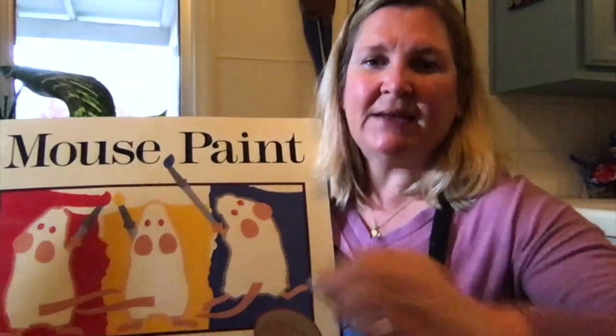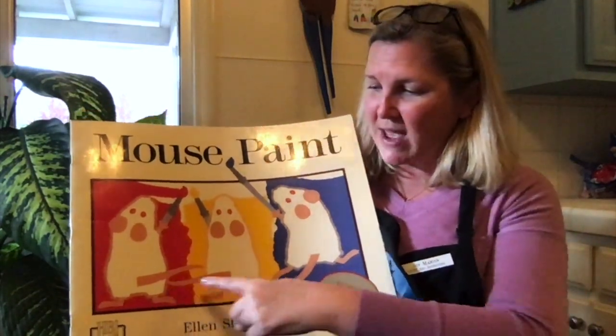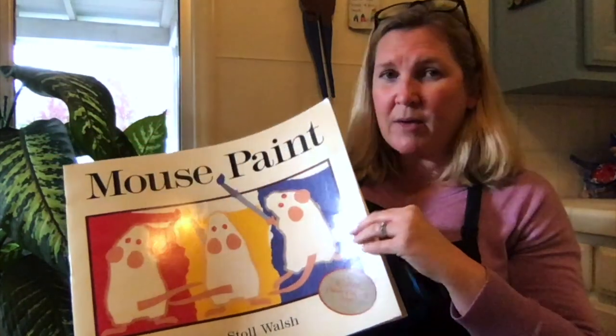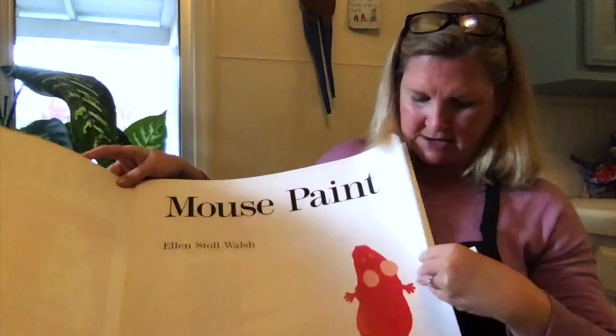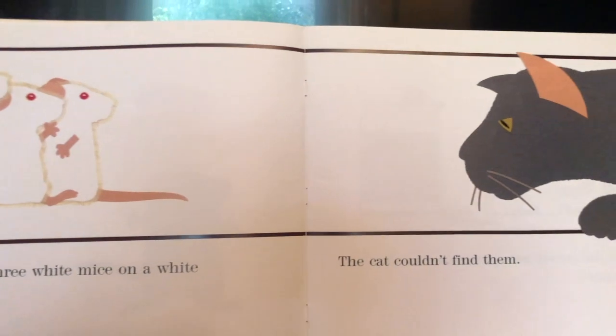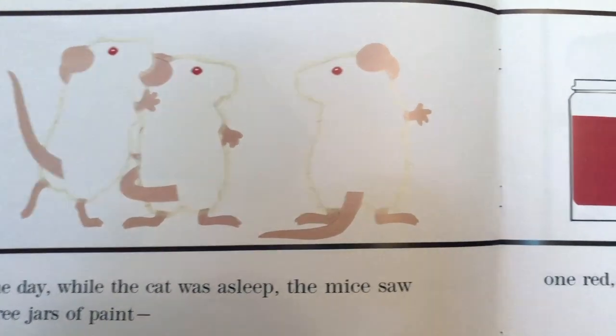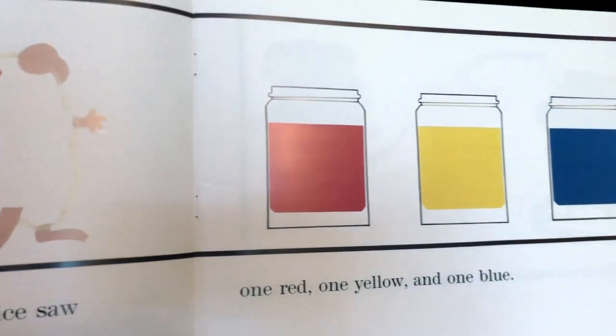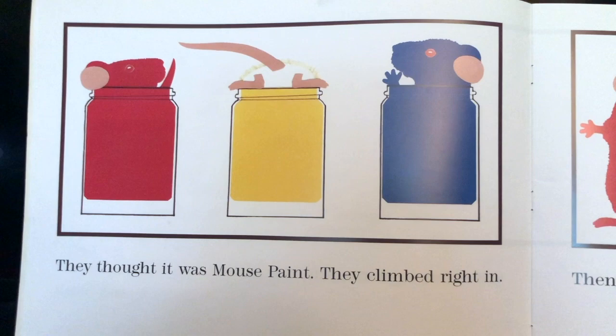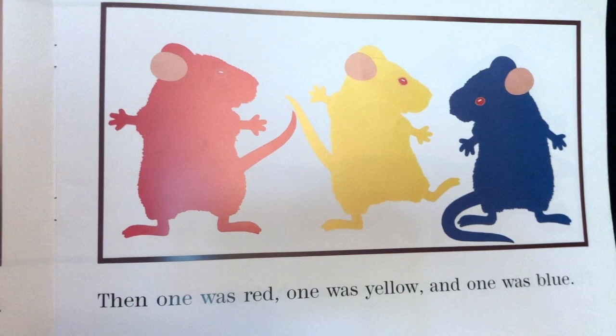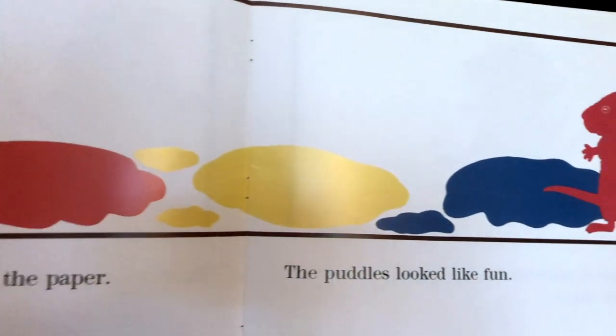This story is called Mouse Paint by Ellen Stoll Walsh. And it's a great book for this lesson because I see right away primary colors, red, yellow, and blue. And remember, our primary colors are the colors that we use to make all of the other colors. Mouse Paint. Once there were three white mice on a white piece of paper. The cat couldn't find them. One day while the cat was asleep, the mice saw three jars of paint. One red, one yellow, and one blue. They thought it was mouse paint. They climbed right in. Then one was red, one was yellow, and one was blue. They dripped puddles of paint onto the paper. The puddles looked like fun.